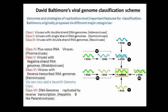Group 7: Double-strand DNA reverse transcriptase viruses — example: hepadnaviruses.